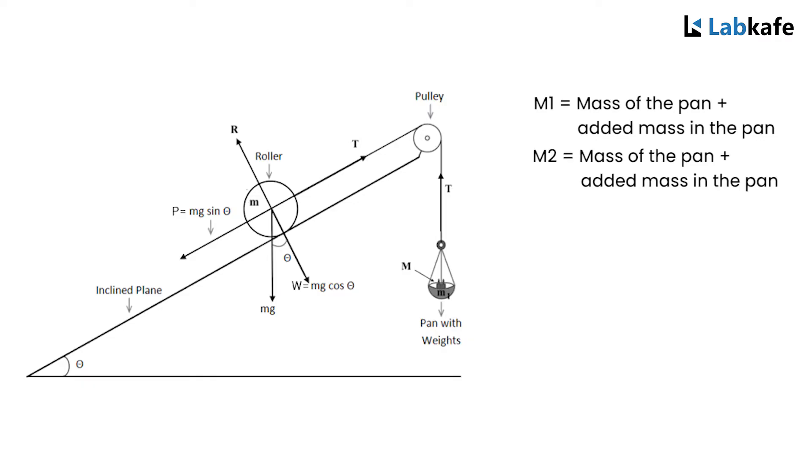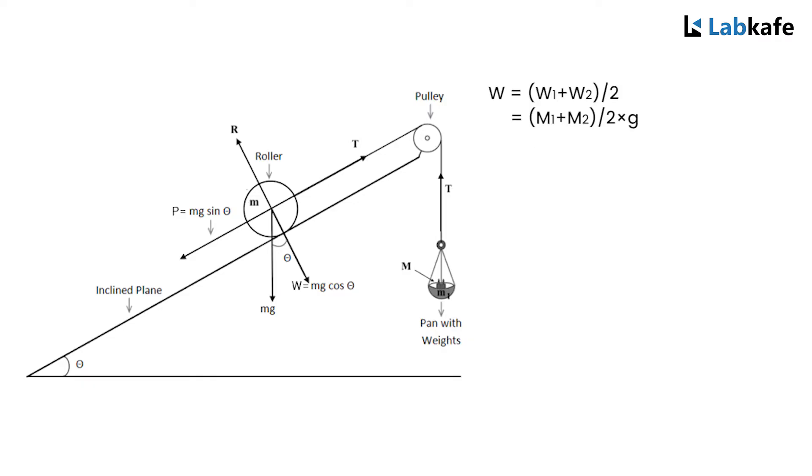Hence the downward force acting on the roller along the inclined plane w is given by w equals w1 plus w2 divided by 2, equals m1 plus m2 divided by 2 times g. The force must be equal to mg sine theta. Therefore, w equals mg sine theta. We have to find w experimentally for different angles theta and find the relation between w and sine theta by drawing a graph. From the above relation, we anticipate that w is proportional to sine theta since m is constant, so the graph would be a straight line passing through the origin.